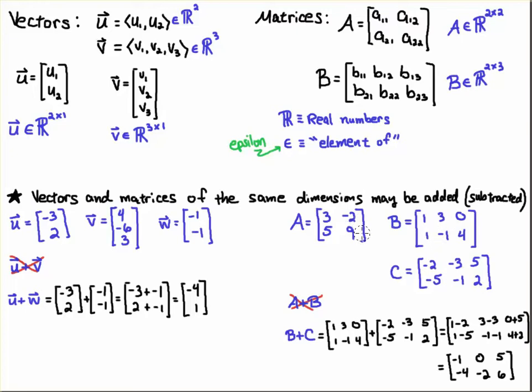But I can add B plus C because they are the same dimensions, 2 by 3. So when I add them, I just add their entries.